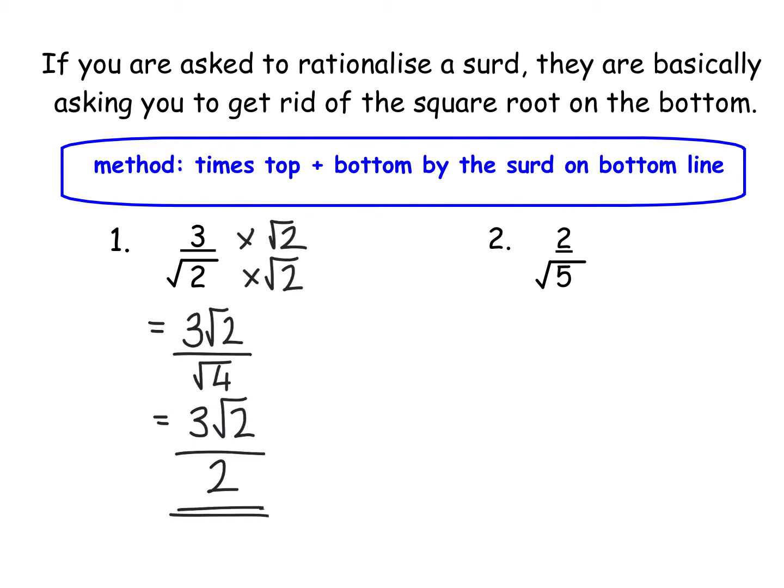Second one we're going to do the exact same. We're going to times the top and bottom by the surd in the bottom so we're going to times top and bottom by root 5 which gives us 2 root 5 over, now root 5 times root 5 is just root 25. The square root cancels out. It's just 5.